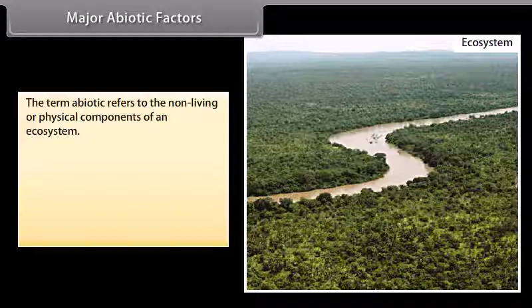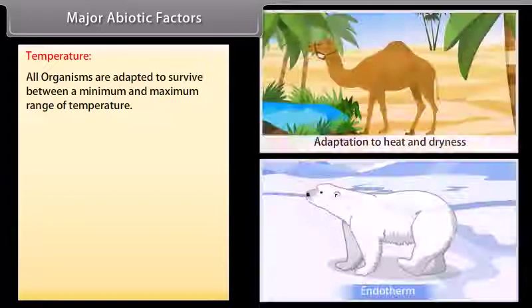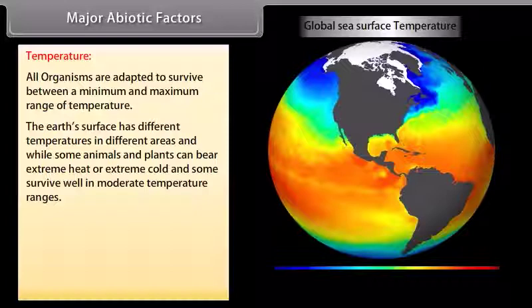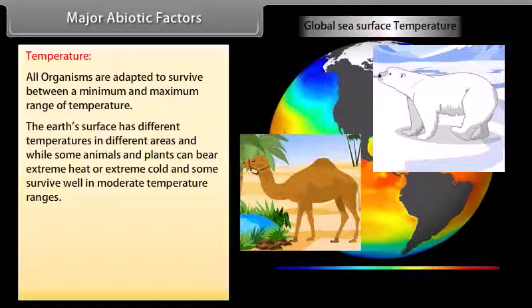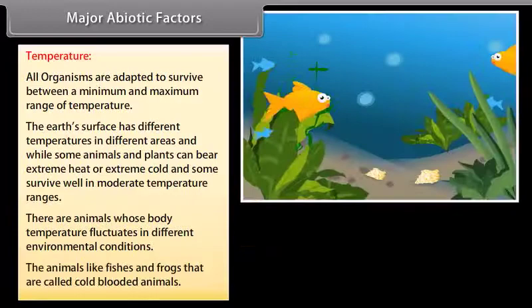Temperature: All organisms are adapted to survive between a minimum and maximum range of temperature. The earth's surface has different temperatures in different areas. While some animals and plants can bear extreme heat or extreme cold, some survive well in moderate temperature ranges. There are animals whose body temperature fluctuates in different environmental conditions — animals like fishes and frogs are cold-blooded animals.